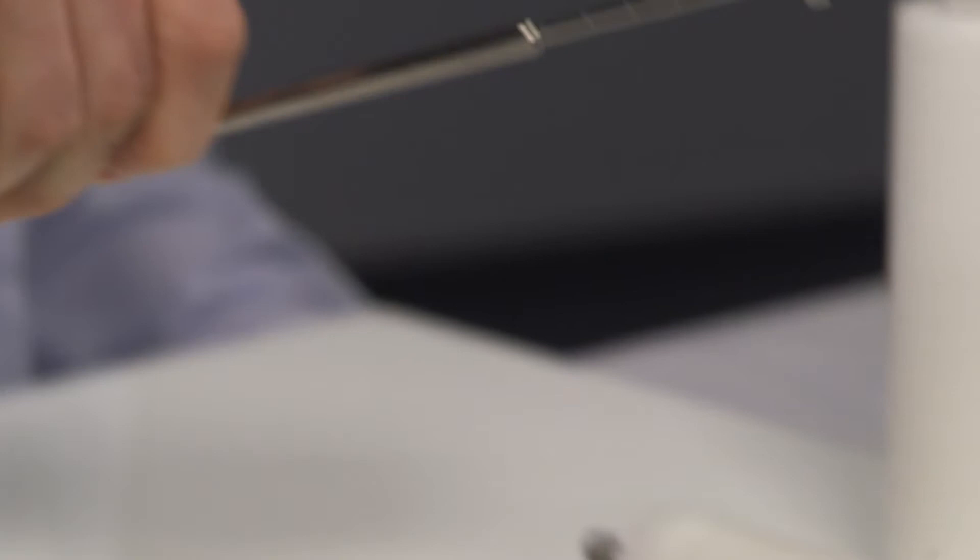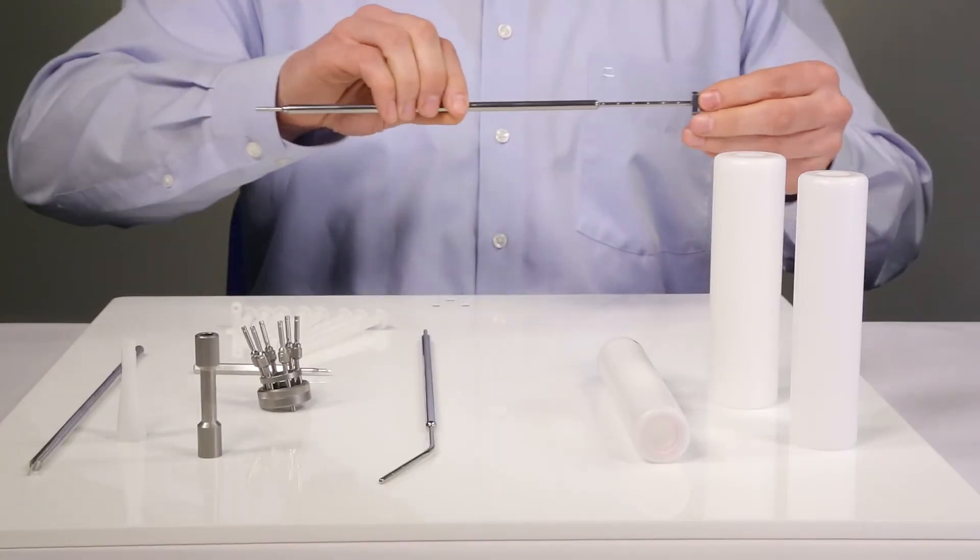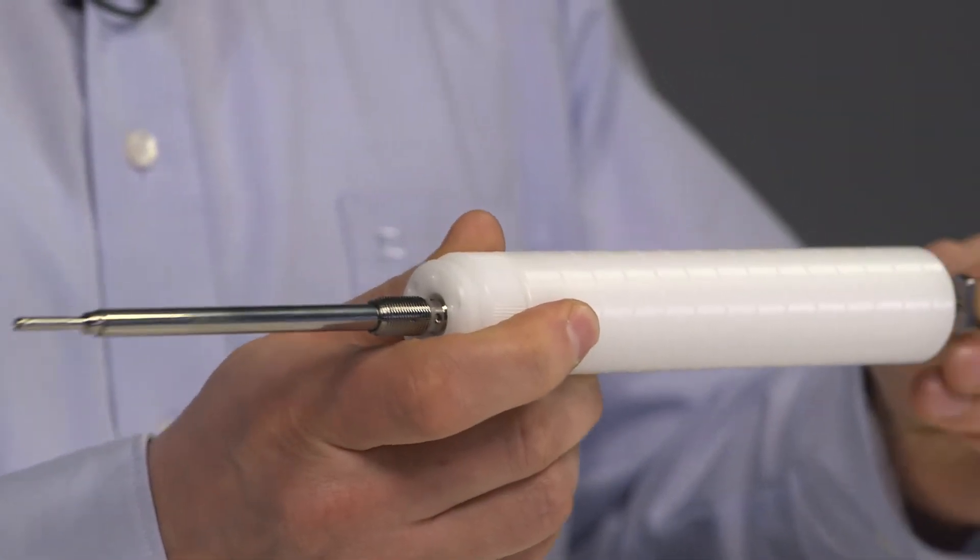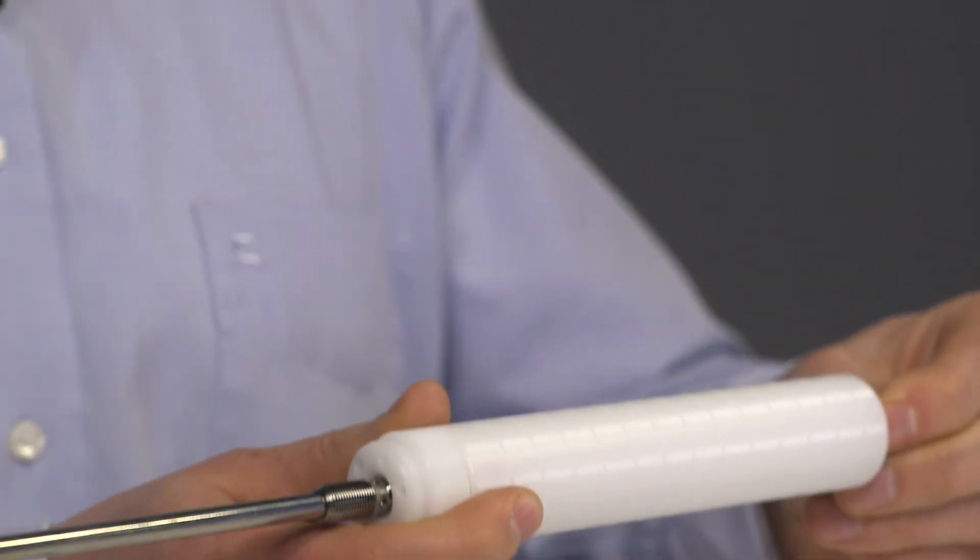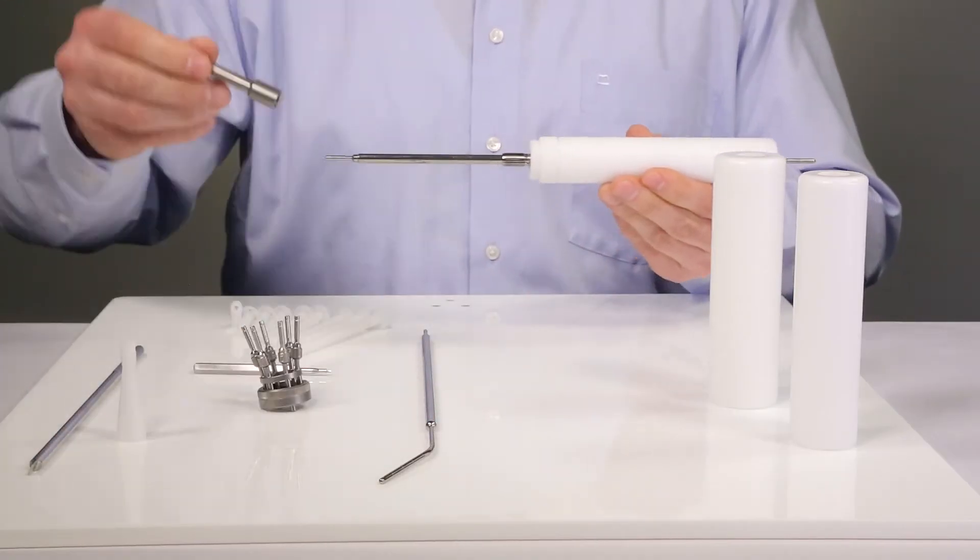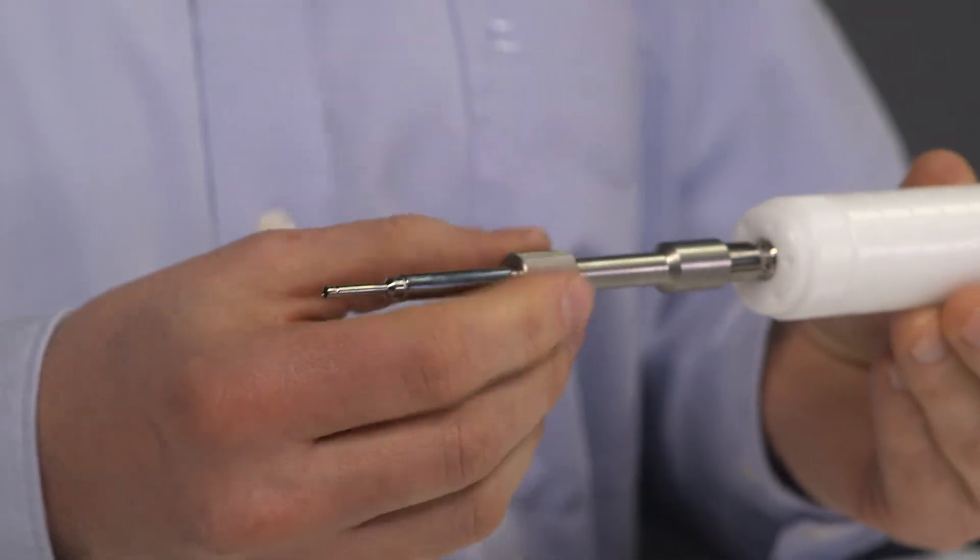Once the IU tube is inserted, the applicator can be pushed over the IU tube until it reaches the cervix. It is fixed with a tandem lock knob.